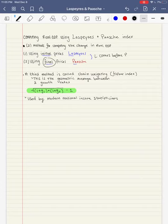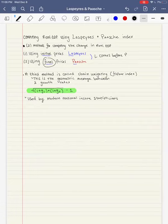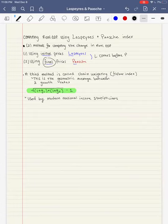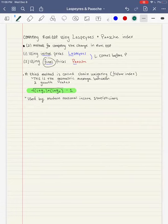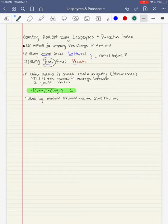We have Laspeyres, which uses initial prices, and the Paasche Index, which uses final prices. And you'll see what this means in a second if you haven't already seen this or used this for calculating growth rates. So one way to remember this is that L comes before P. L comes before P, so that means that L is initial and P would be final.